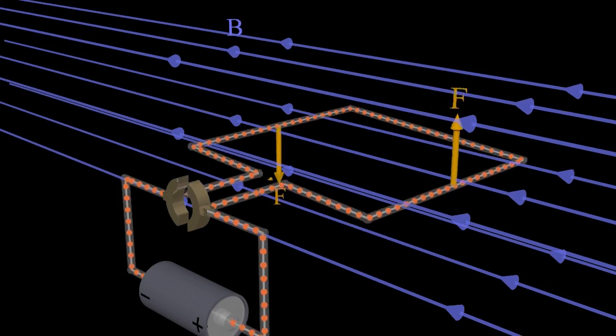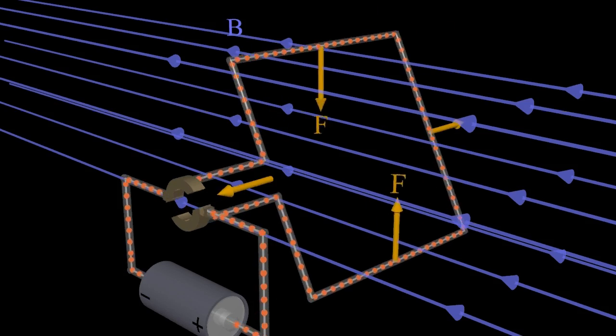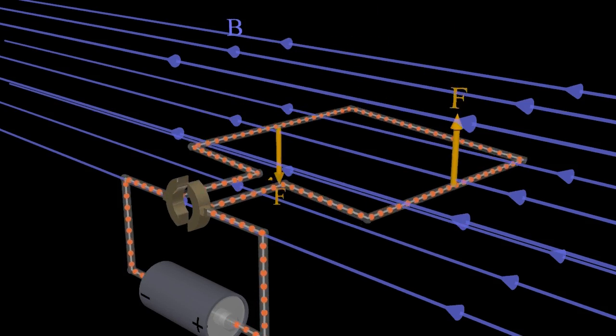The torque in a DC electric motor is created by magnetic forces exerted on the electric current carried by the rotating part of the motor.